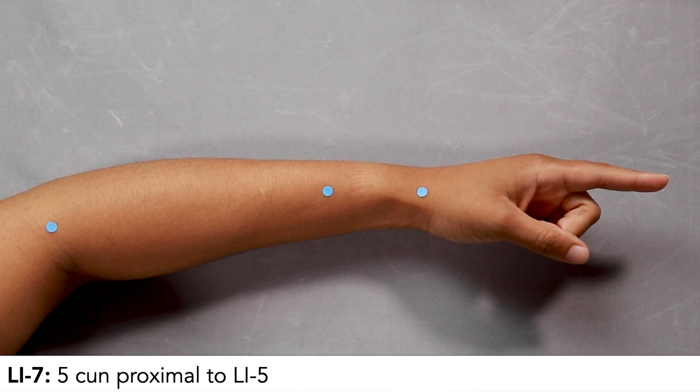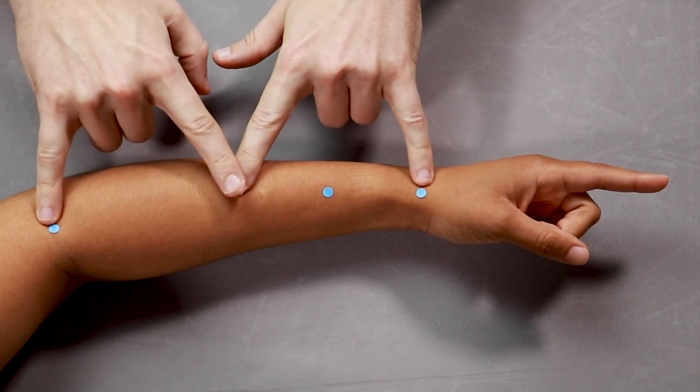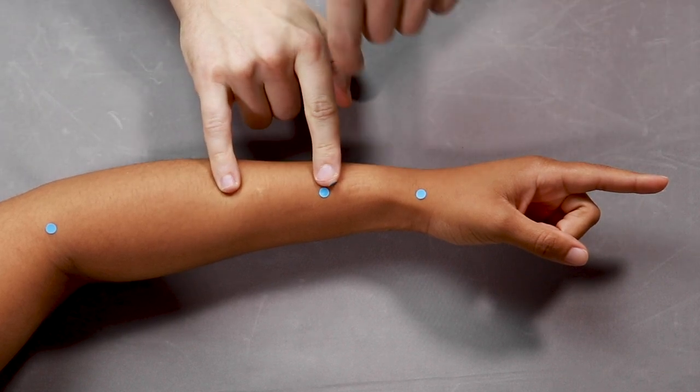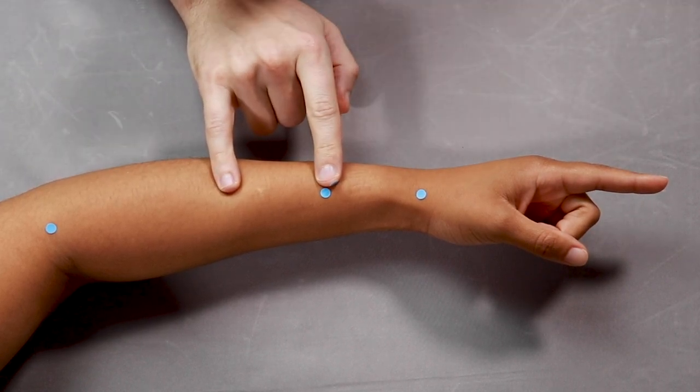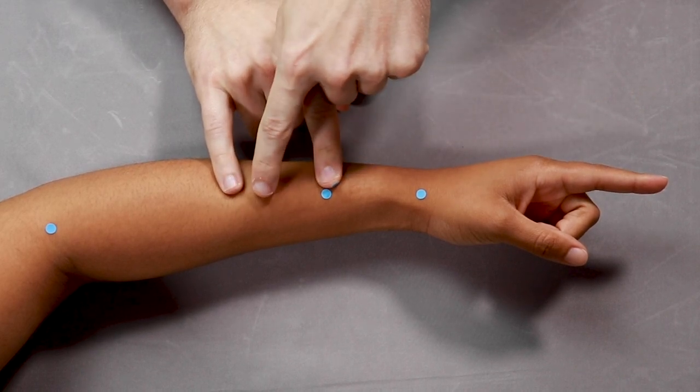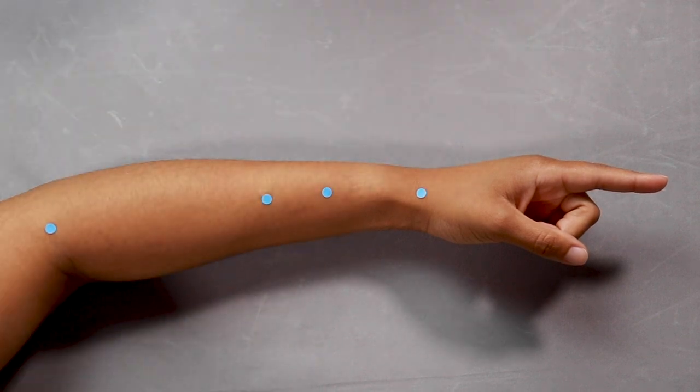LI7 is 5 cun up. Here's 12 cun. Half of 12 is 6. Half of 6 is 3. So then we can just visually divide it into thirds. Here's 3, 4, 5, 6. We want 5 cun for LI7.